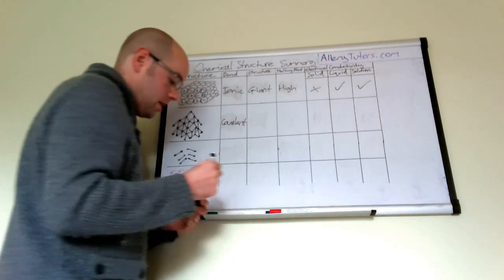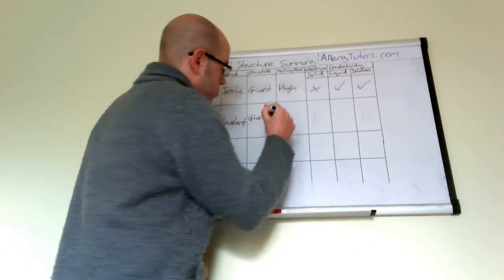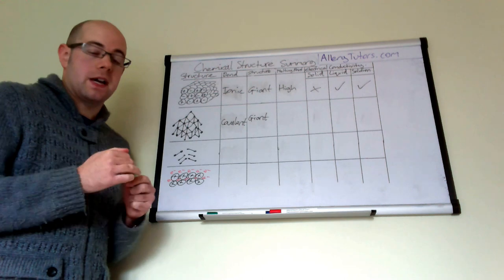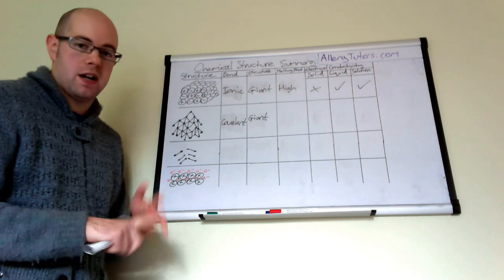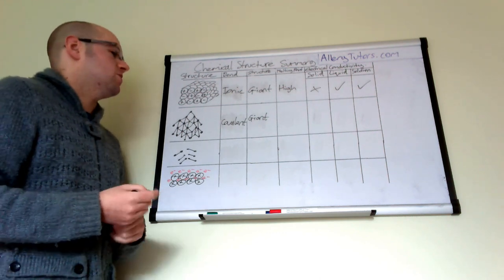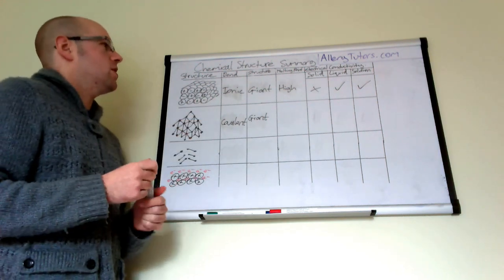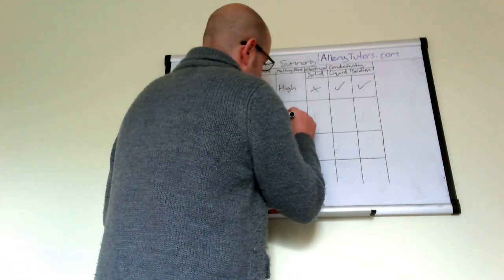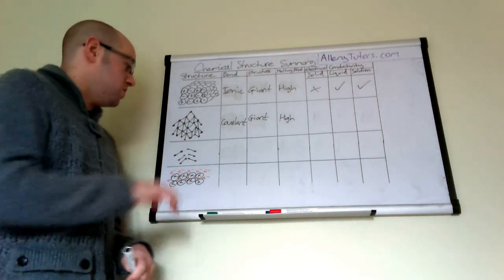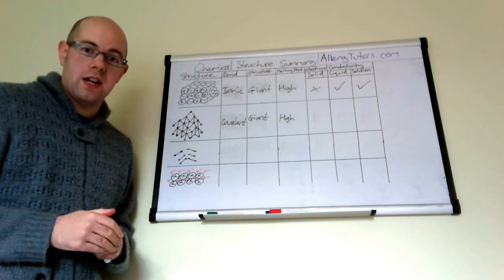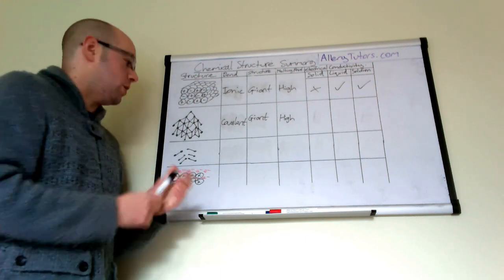The next type is giant covalent, also known as macromolecular. These come in different forms — things like diamond, graphite, sulfur, and silicon dioxide. There are lots of them and they all arrange themselves in different ways. The general property is that they have high melting points, because they have many strong covalent bonds which require a lot of energy to overcome.